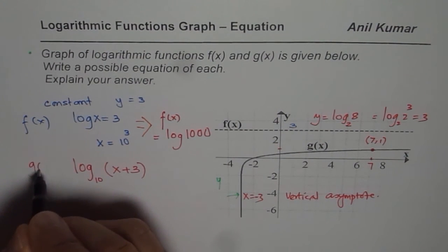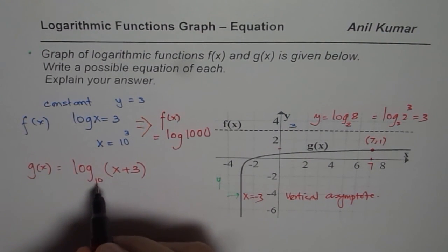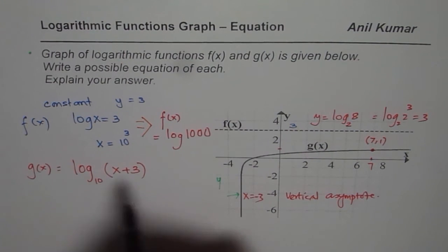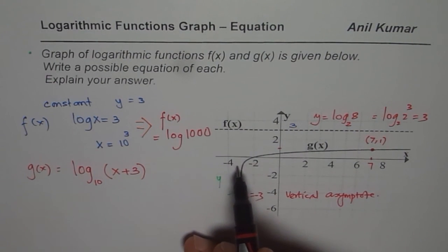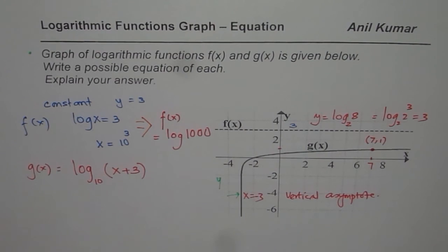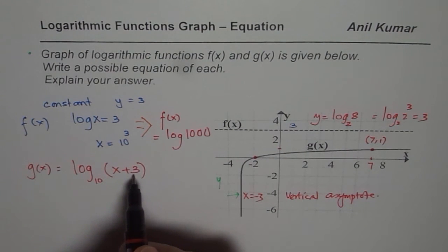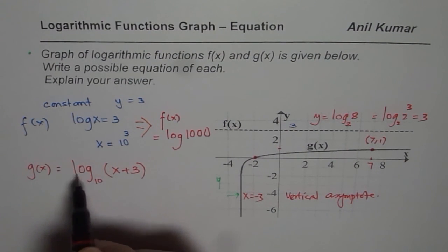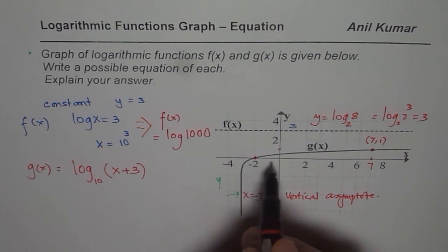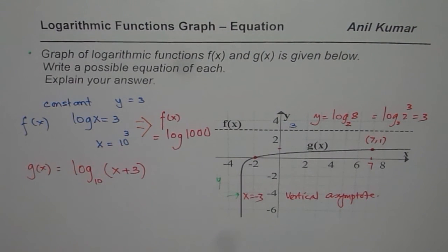So I know now that g of x is log to the base 10 of x shifted 3 units left. So that becomes my function. Another test here is, if I substitute minus 2 here, then what do I get? I will get log base 10 of 1, which is going to be 0.